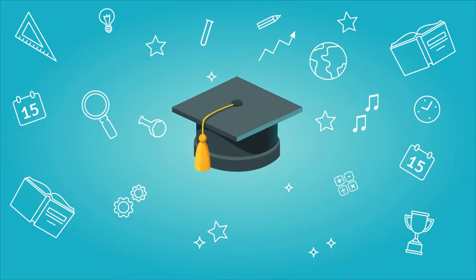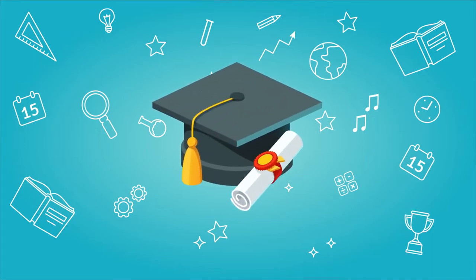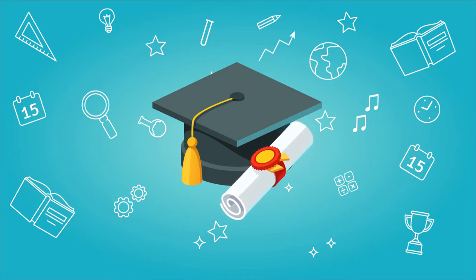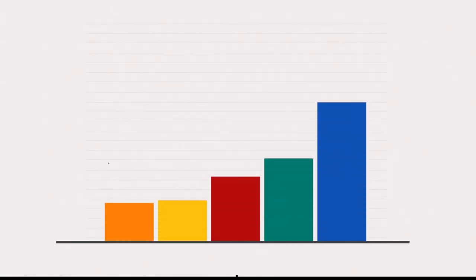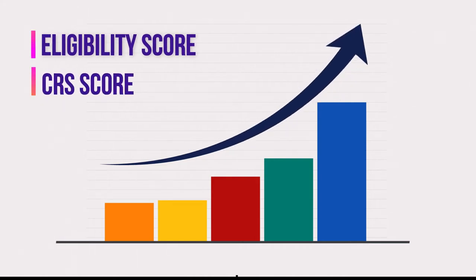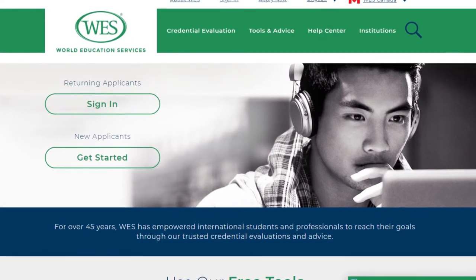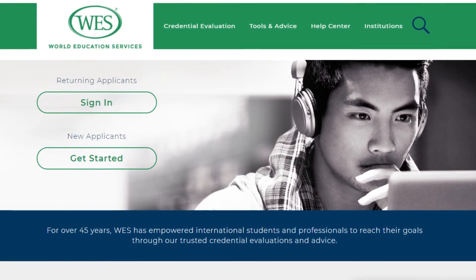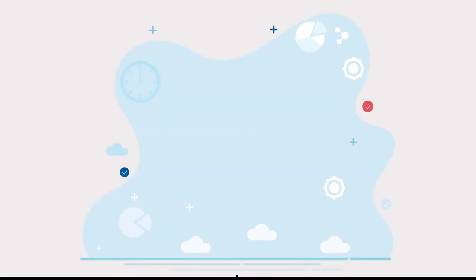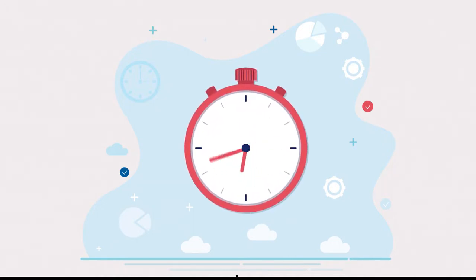Getting your Educational Credential Assessment, or ECA for short, is one of the first and most crucial steps in determining your eligibility to immigrate to Canada. Your ECA report determines what your education outside of Canada is worth within Canada. Both your eligibility score and your CRS depend on the ECA you have, and it holds a validity of 5 years. World Education Services, or WES, is one of the most preferred institutes for getting the ECA report, because they are the fastest, and you might already know how time is a very crucial factor in determining when you will get your ITA.